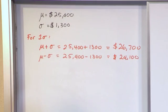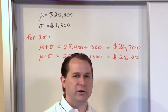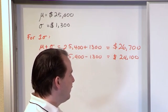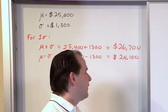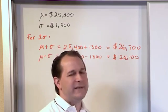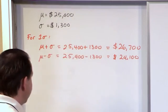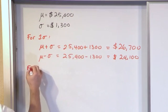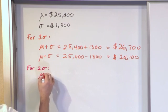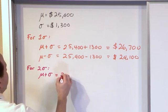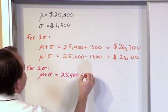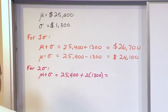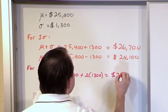That gives us 24,100. Looking at this, we can see that 1 sigma does not line up with what we're asked — we're trying to find between 22,800 and 28,000, so these 1-sigma limits don't match. We continue and look at 2 sigma. The mean plus 2 standard deviations is 25,400 plus 2 times 1,300. That gives us 28,000.